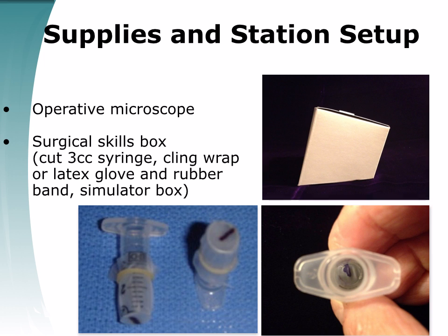At each station, there will be an operative microscope, a surgical skills box, otologic micro-instruments, and various pressure equalization tubes. The operative microscope is equipped with a 250mm lens. The surgical skills simulator is fabricated with an empty cube cardboard box; a 3cc syringe is cut to a length of 2.7mm, a latex glove covers one end and is secured with a rubber band, and the syringe apparatus is placed in a hole created in the center of the box.